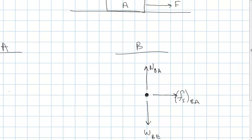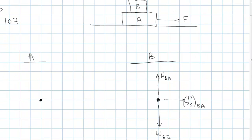Let's take a look at block A. What's touching block A? The ground, or the table — whatever it's sliding on. That can interact in two ways: through a normal force on A from the table, and through a friction force. Block A is sliding across that surface, so this is kinetic friction. Kinetic friction is opposite the direction of motion, so I have a force pointing to the left on A from the table.